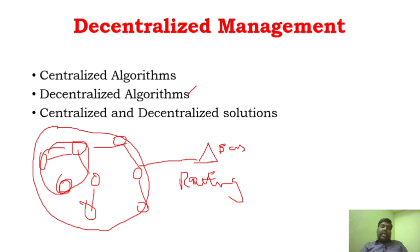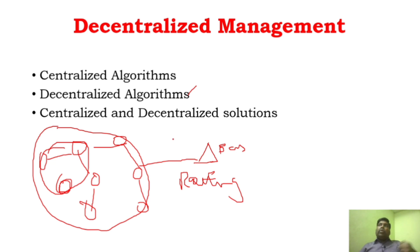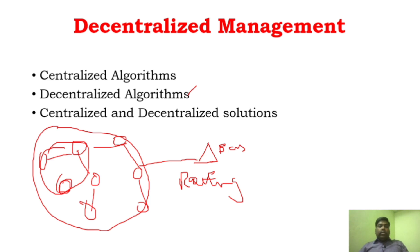However, there will be one particular challenge: you will not have an optimal solution with decentralized management. We can reduce overhead and reduce energy, but an optimal solution is sometimes not achievable because the decision is taken only with local nodes, and local routing takes place. That is one important challenge in decentralized solution that needs to be addressed.